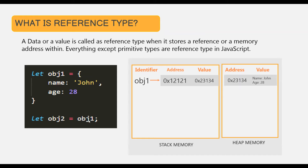Then we assign OBJ1 to OBJ2. What is OBJ1 storing? It is storing a reference. When we assign it to OBJ2, that same reference gets copied from OBJ1 to OBJ2. An identifier for OBJ2 is created, and since OBJ2 is also storing this same reference, it will also point to the same memory address. Both OBJ1 and OBJ2 are storing the same reference and pointing to the same object in the heap memory. That is what a reference type is: it does not store the value itself, it stores a reference to that data. If you want to learn more, please go through the value type and reference type lecture of this JavaScript course.